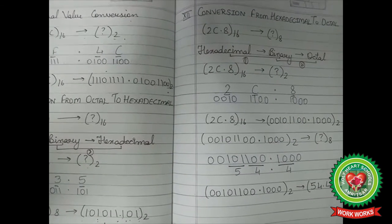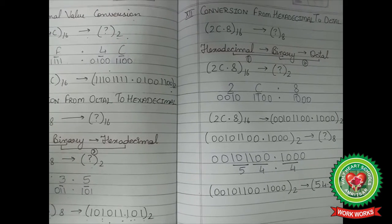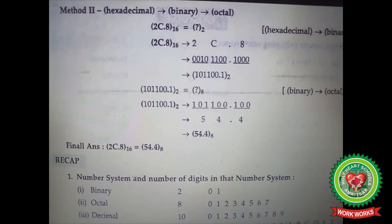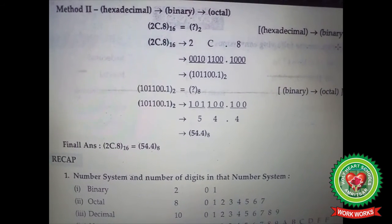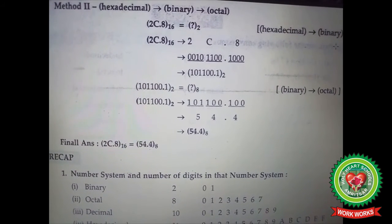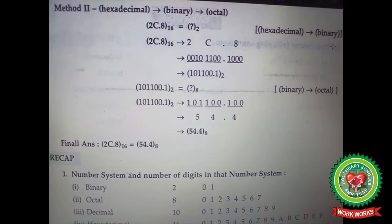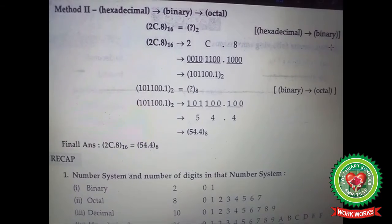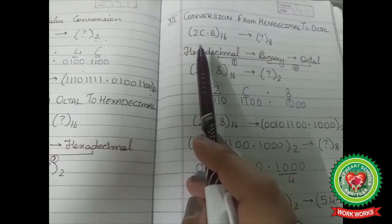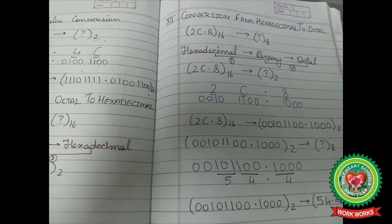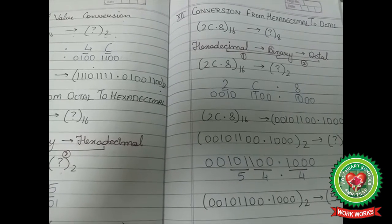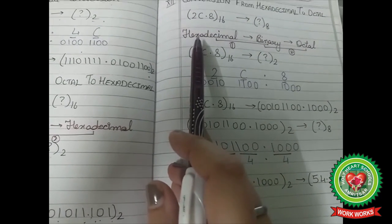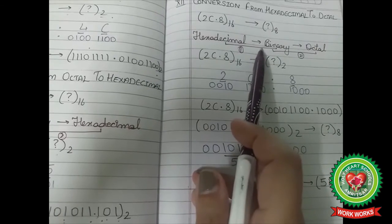Now we are left with the last conversion: hexadecimal to octal. For this I will use Method 2 — first convert the hexadecimal number to binary, then convert that binary number to octal. Let's convert 2C.8 base 16 (a hexadecimal number) to an octal number. The first step is to convert this hexadecimal number into binary.